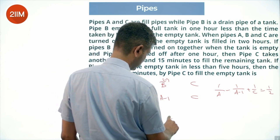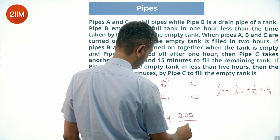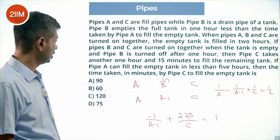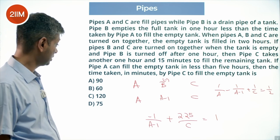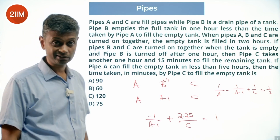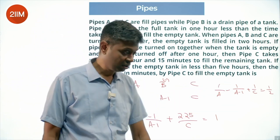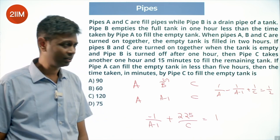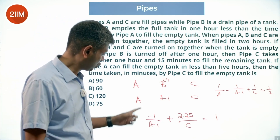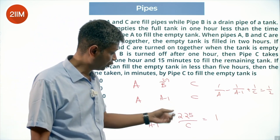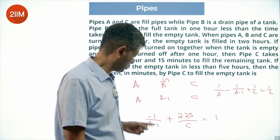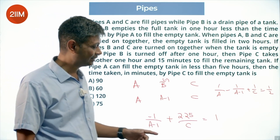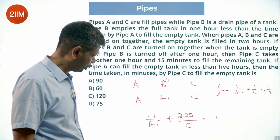So the equation for the second condition is: minus 1/(A-1) plus 2.25/C equals 1. Pipe B is kept open for 1 hour and C is kept open for 2 hours and 15 minutes, and then the tank gets filled. This gives us another equation in A and C. Even though reciprocals make it look complicated, let's work through it.